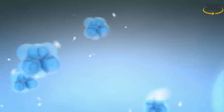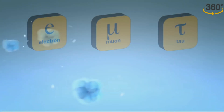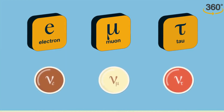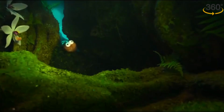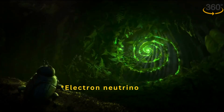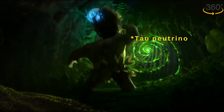Neutrinos are interesting because they have several unusual properties. For example, they come in three flavors — electron, muon, and tau — and can transform from one flavor to another as they travel through space. This means that a neutrino created as an electron neutrino may be detected as a muon or tau neutrino after traveling a certain distance.